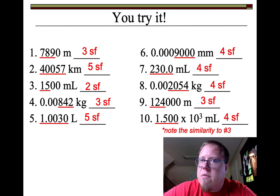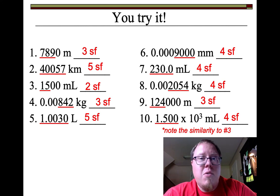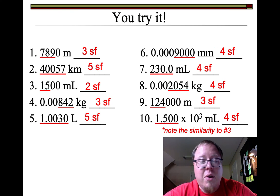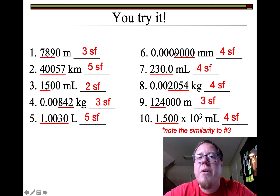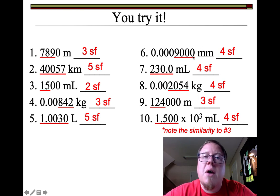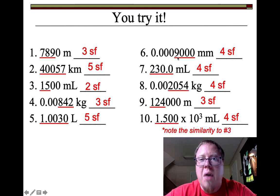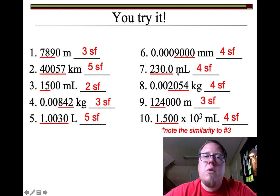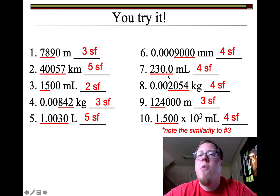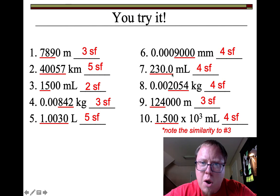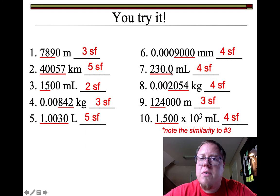Number six has four significant figures — all the zeros on the end are there to show you those really small place values, but the zeros in front are just placeholders telling you how small it is. If you convert this into scientific notation, it would be 9.000 × 10⁻⁴ — you're only keeping the four significant figures. Number seven has four significant figures — the two and three count, meaning the zero in between counts as well.